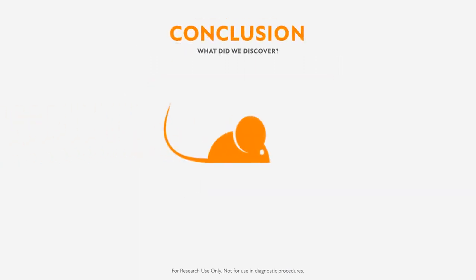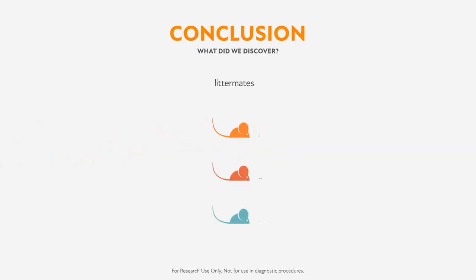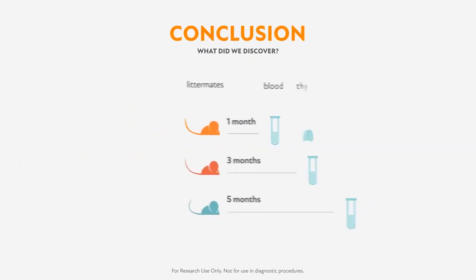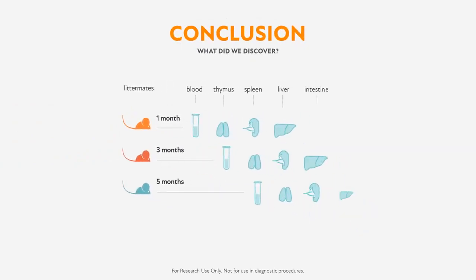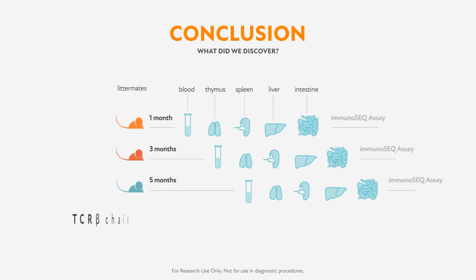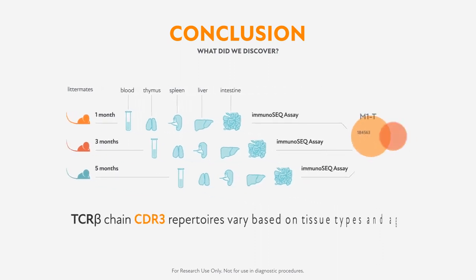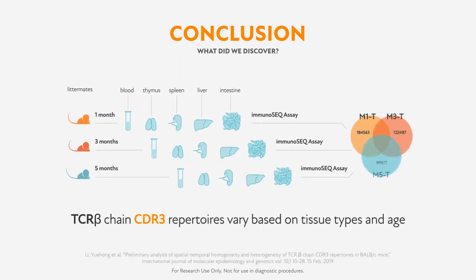The quantitative results for clonality metric comparisons — specifically of CDR3 amino acid sequences provided by the ImmunoSeq assay — helped capture the TCR repertoire dynamics. We learned that TCR repertoires can evolve and change over time, specifically supported by study data demonstrating a variation in TCR beta chain CDR3 repertoires based on tissue type and time.